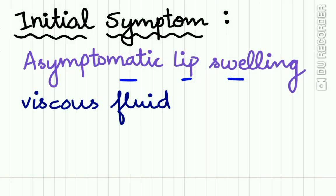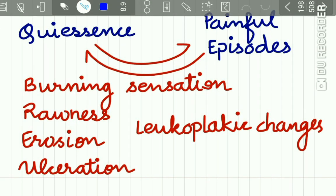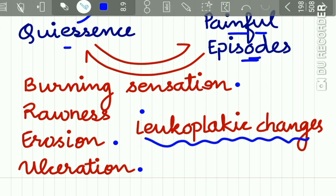From this asymptomatic lip swelling, viscous secretions are expressible from the ductal openings. You can see in this picture the initial swelling of the lip from which viscous fluid can be expressed. Cheilitis Glandularis has periods of quiescence interrupted by painful episodes resulting in burning sensation, rawness, erosion, ulceration, and sometimes leukoplakic changes.